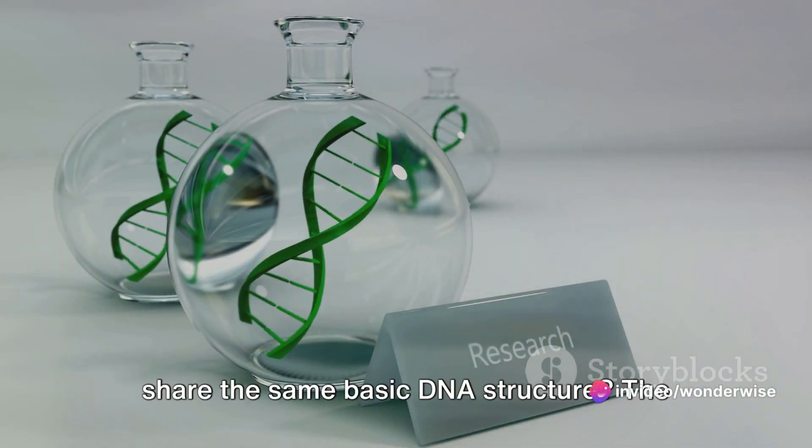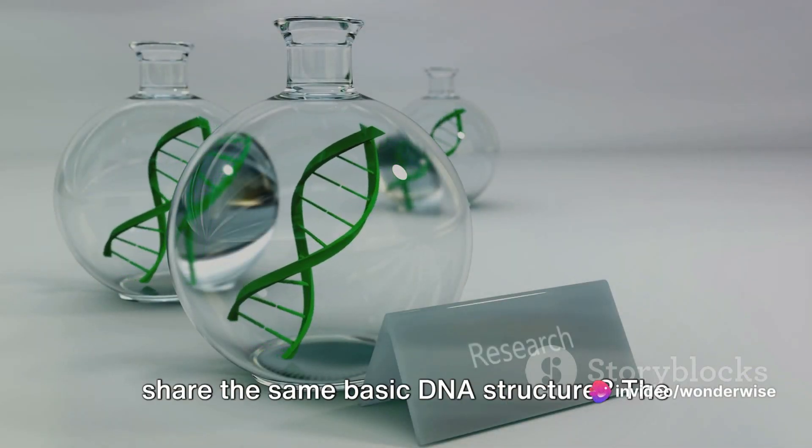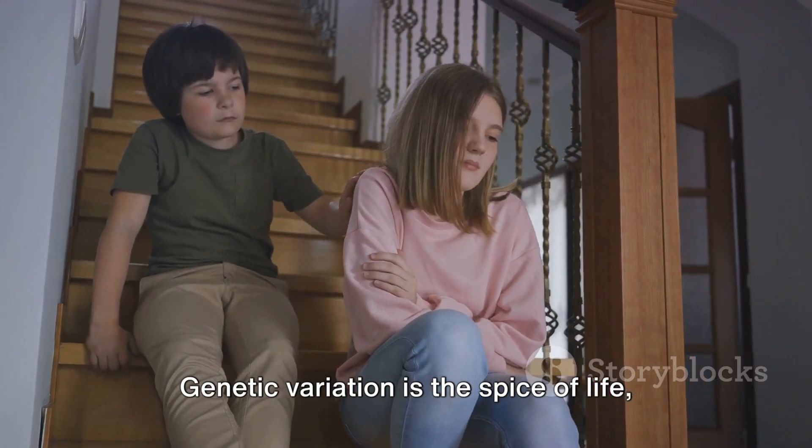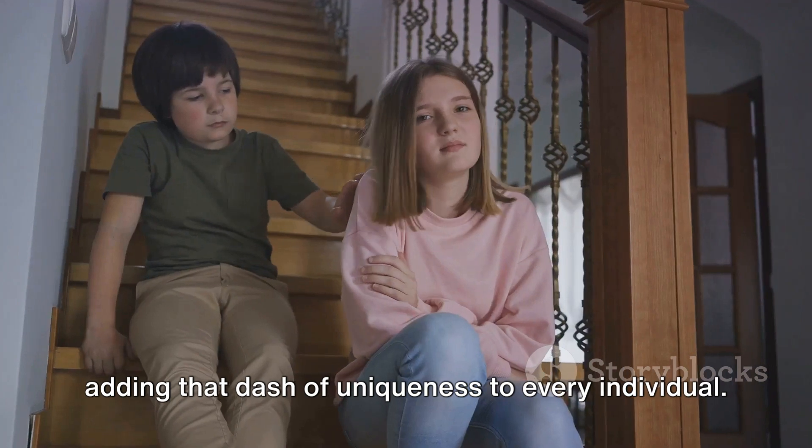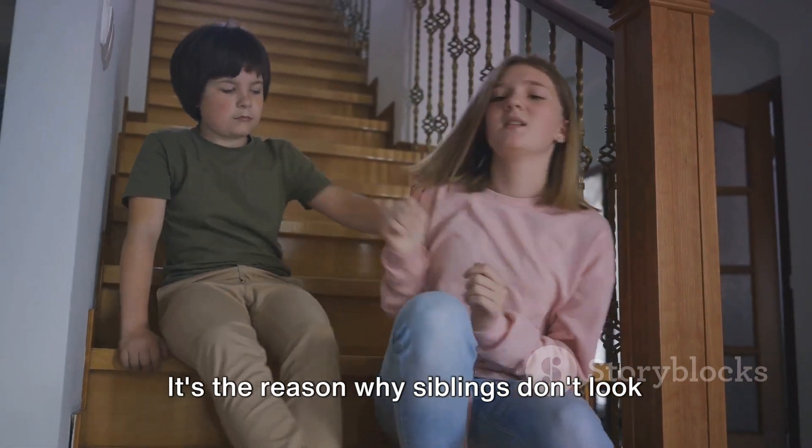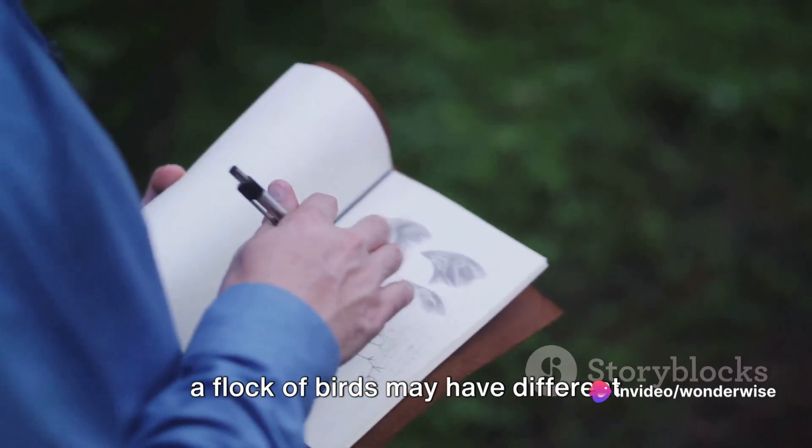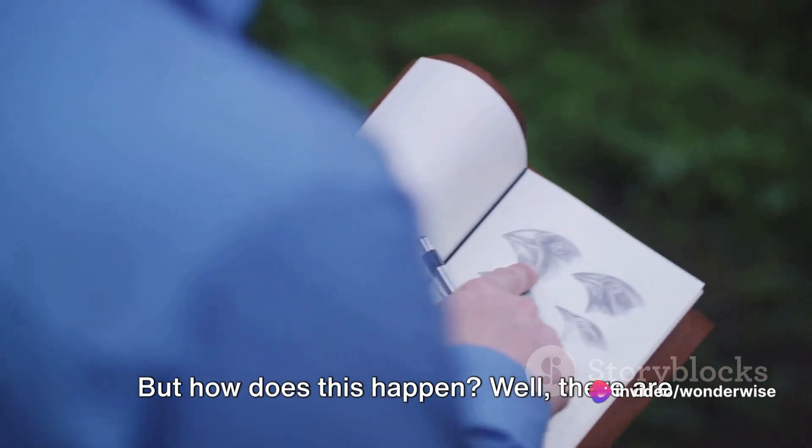Why are we all different even though we share the same basic DNA structure? The answer lies in genetic variation. Genetic variation is the spice of life, adding that dash of uniqueness to every individual. It's the reason why siblings don't look exactly like clones of each other or why a flock of birds may have different patterns on their feathers. But how does this happen?